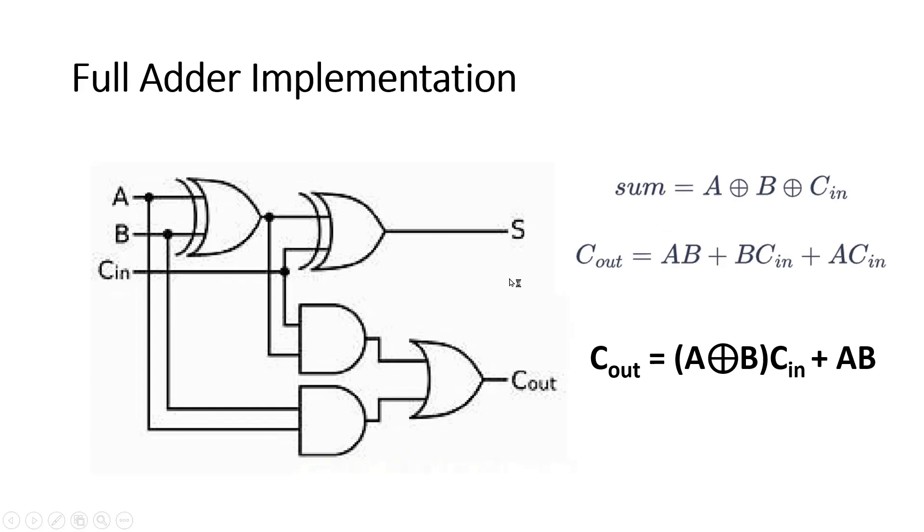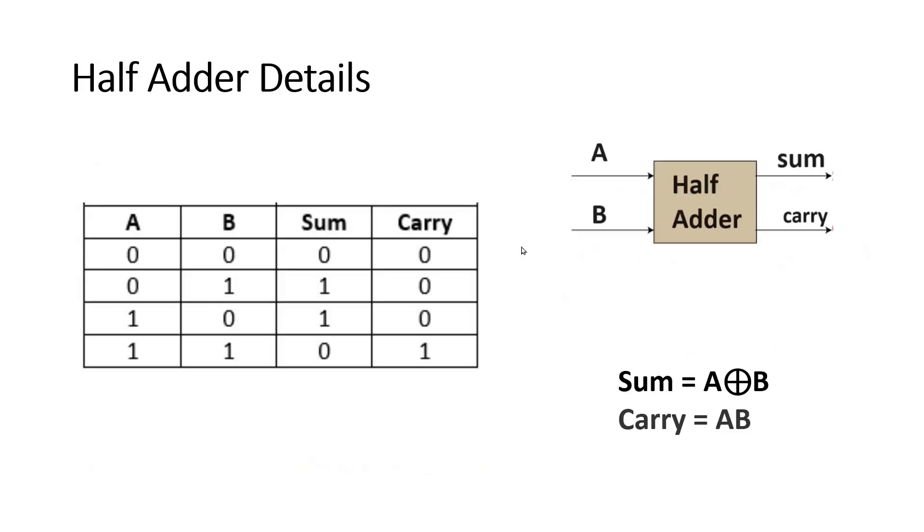Now my question was how to implement a full adder using two half adders. We will use these expressions only. Before proceeding to the solution, let us see what is a half adder. Half adder has two inputs A and B, two outputs sum and carry. These are the two expressions: sum is equal to A XOR B, carry is equal to AB. And this is the truth table. I assume that you already know it.